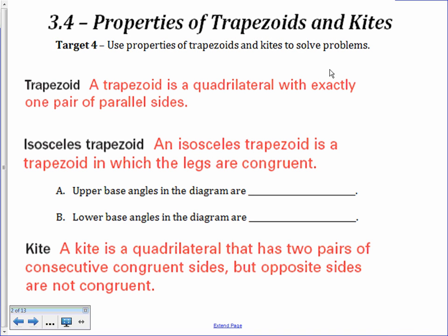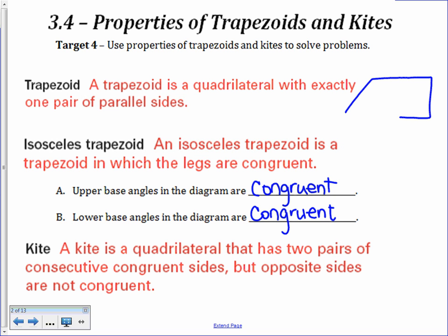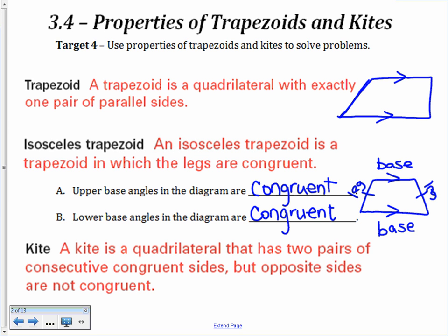Go ahead and pause the video and write in the following information so that you can have the vocabulary in your note packet. For the trapezoid, we have exactly one pair of parallel sides — it's a figure with exactly one pair of parallel sides. The isosceles trapezoid has congruent legs. The parallel sides are called the bases, and the non-parallel sides are the legs, which must be congruent for it to be an isosceles trapezoid.